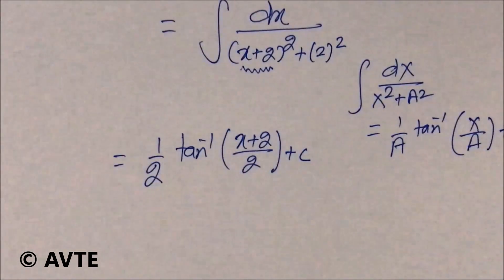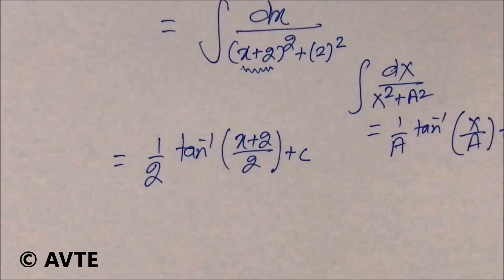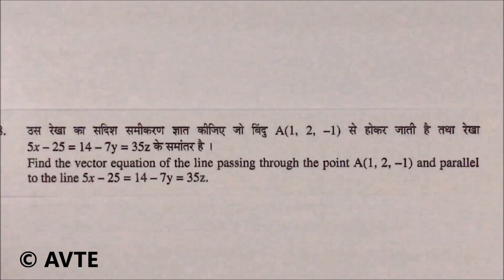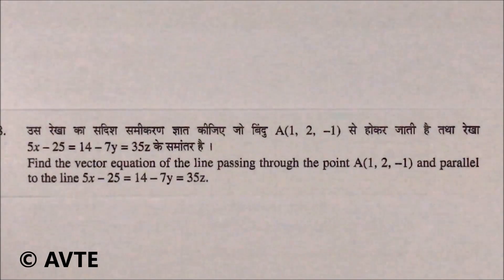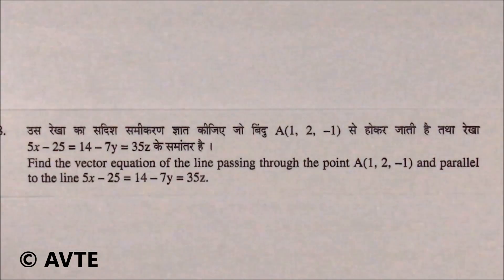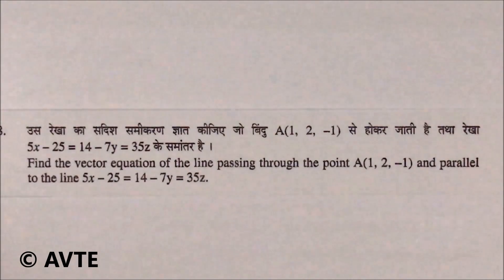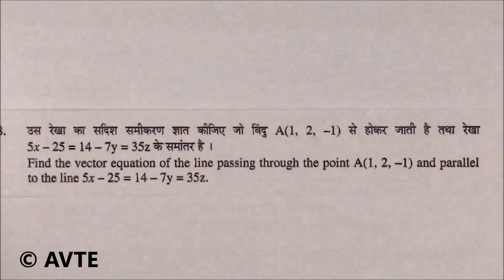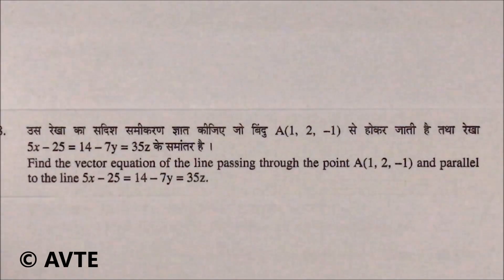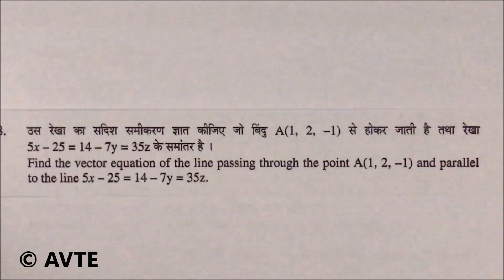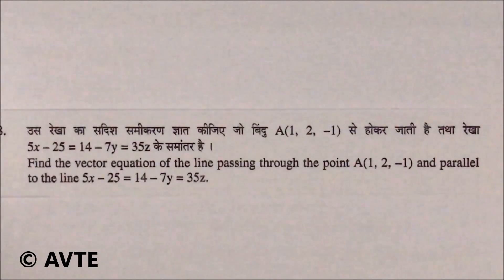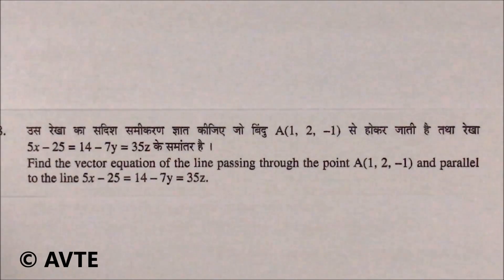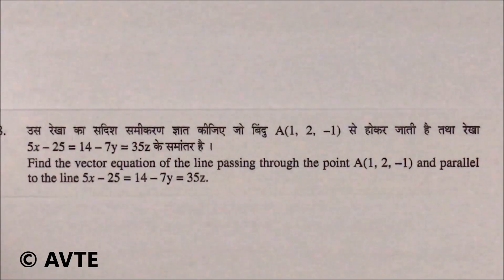Question number 8: find the vector equation of a line passing through the point A(1, 2, −1) and parallel to the line 5x − 25 = 14 − 7y = 35z. Since the required line is parallel to the given line, the direction ratios will be equal or proportional. The only trick the question demands is to get the given line into standard form.